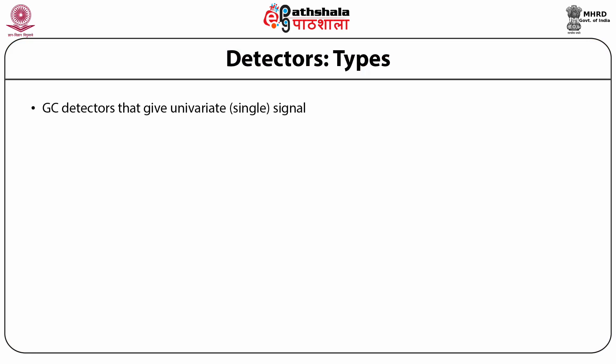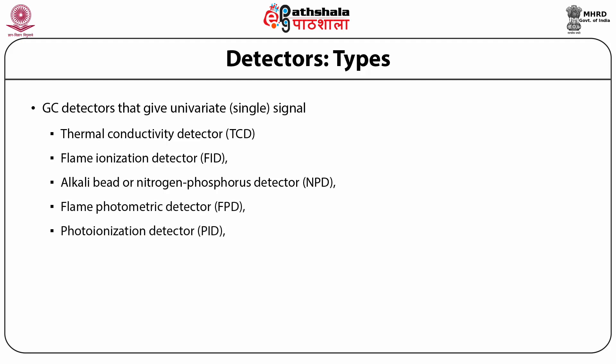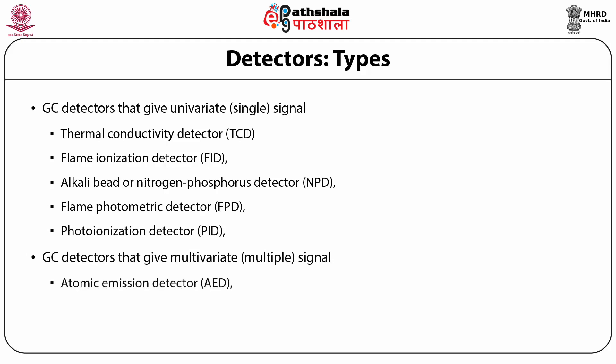Detectors can be classified on the basis of the signal they produce. Examples of detectors that give single signals are thermal conductivity detector, flame ionization detector, alkali bead or nitrogen phosphorus detector, and flame photometric detector. Examples of detectors that give multiple signals are atomic emission detector, infrared detector and mass spectrometer.